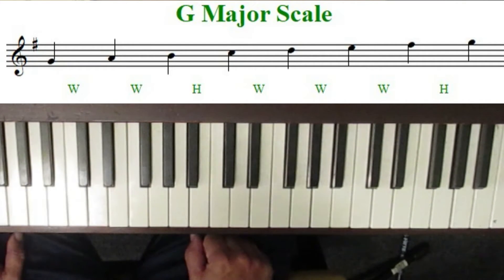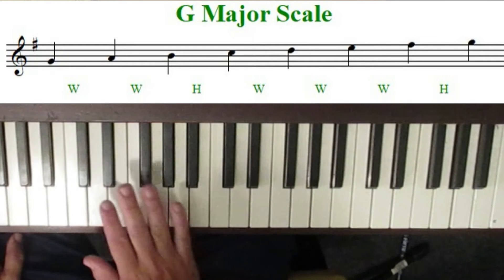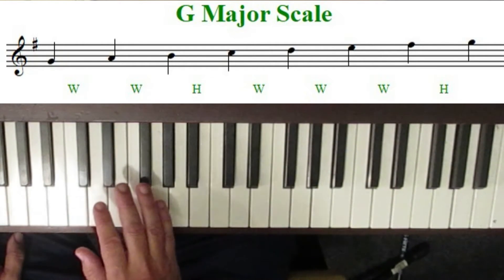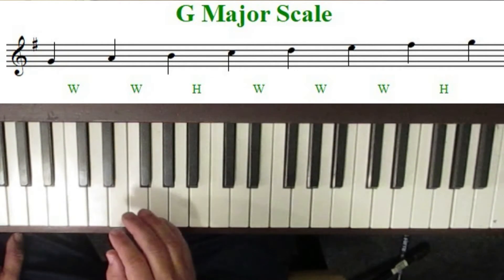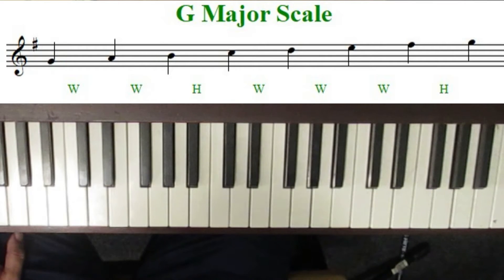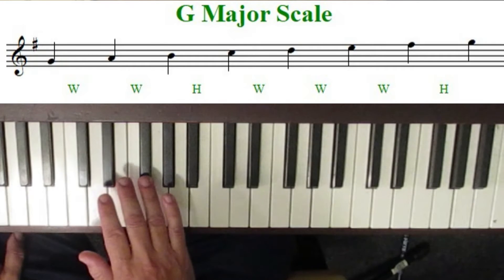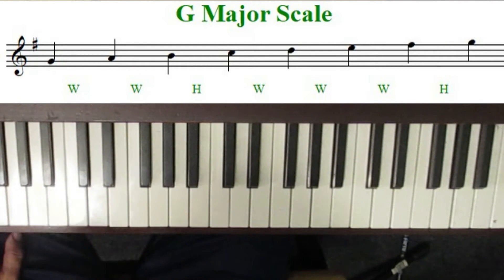So what we do in music, rather than writing that F sharp every time when we're playing a melody that's in the key of G, we just put the F sharp right beside the treble clef, and that tells us that every time we play the F, it's going to be sharpened in this key. So the key of G has one sharp in it, and that sharp is F sharp, and you'll see that reflected right beside the treble clef.